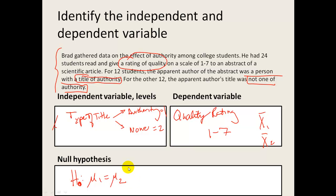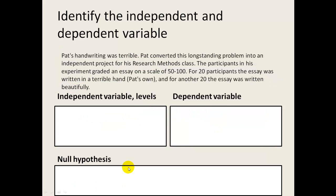Pat's handwriting was terrible. Pat converted this longstanding problem into an independent project for his research methods class. The participants in his experiment graded an essay on a scale of 50 to 100. For 20 participants, the essay was written in terrible handwriting, his own. And for 20 others, the essay was written beautifully. So it's the same essay. The question is, is there a difference in the average grade?